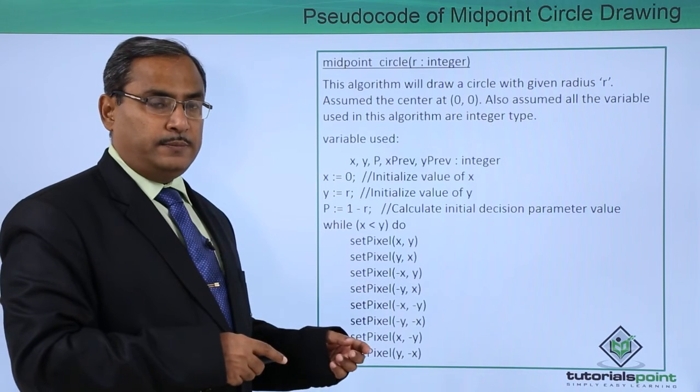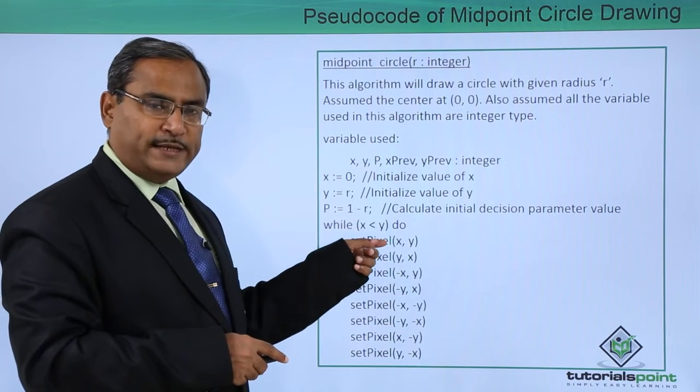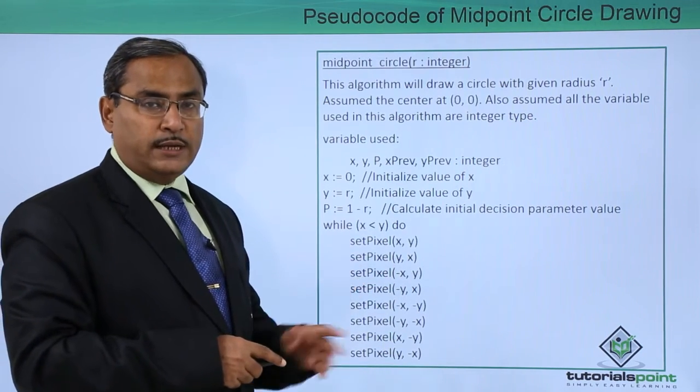Which we discussed in the previous video - these are the respective points. If you can plot this x, y, then obviously another 7 points can be plotted using mirror symmetry.